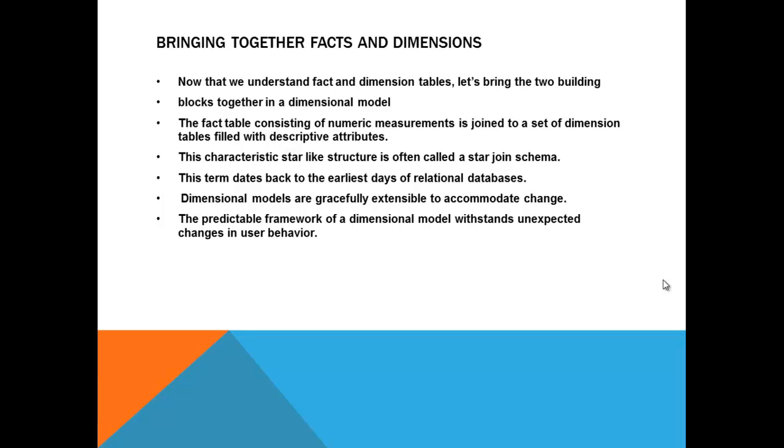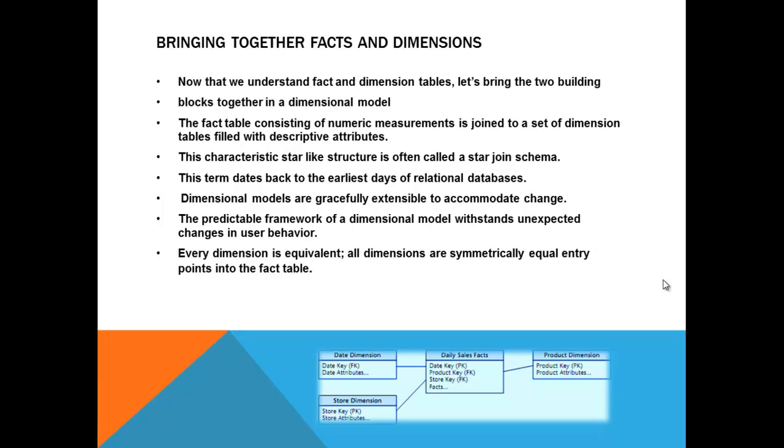Every dimension is equivalent. All dimensions are symmetrically equal entry point into the fact table. So equal importance for every family member. If anyone is given no importance, they are going to run out of the home. So everything literally speaking is the same importance. This is the dimensional model we were talking about. So there is a small fact table, the date key, product key, store key and the rest of the information like quantity sold and the dollar amount. It is surrounded by a date dimension, the store dimension and a product dimension. So you are looking at it in the product market and time.